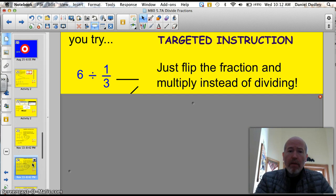Well, let's just double check this. 4 times 3 is 12. 12 divided by 4 is 3. Yes! It worked. So, you can use that way to check it. I'm going to have you try one right away. You try 6 divided by 1 third. Just flip the fraction and multiply instead of dividing. Go.